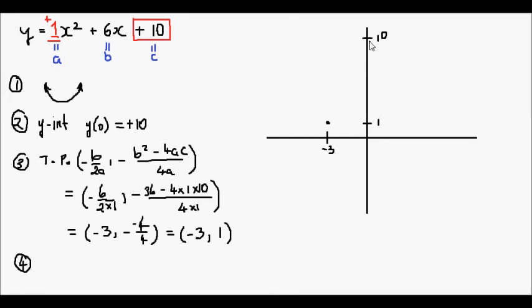And the y-intercept is at positive 10. And we know that the parabola opens upwards. So if we are going to get any x-intercepts, it looks like we have done something very wrong.